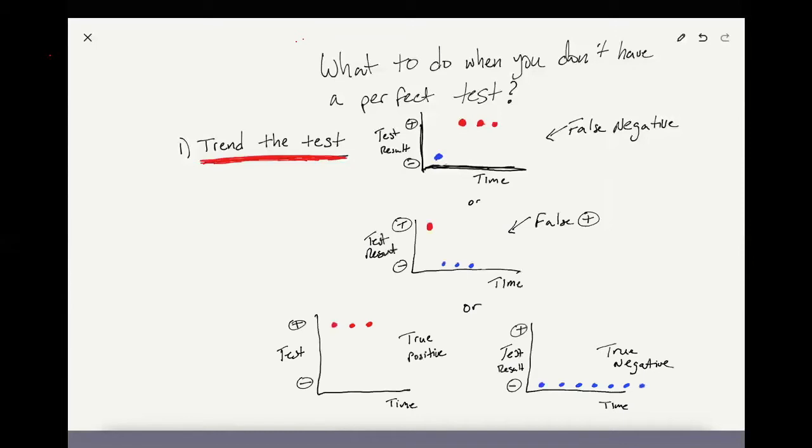In this case of a false positive, patient initially tests positive, but doesn't really seem to have any of the other symptoms of the disease. So you keep testing them for various reasons. And they test negative, and you're like, oh, okay, well that was a false positive. So you're informed based on the serial testing.